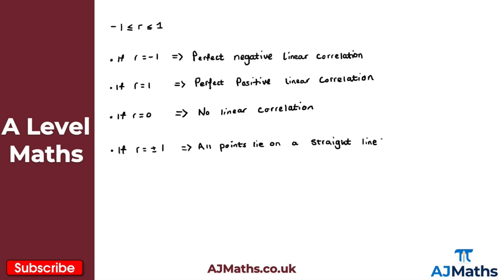Let's do a few quick sketches of different types of correlation. So here is my x-axis and y-axis. If r equals one, all the points lie on a straight line going upward — something like this. That's an example where the product moment correlation coefficient is equal to one.